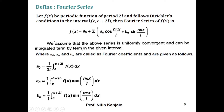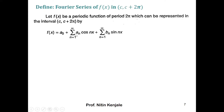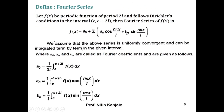Now let us find the Fourier series of f(x) in the interval c to c+2π, where the period of f(x) is 2π. All you have to do is simply replace every l in this definition by π. After substituting l = π, the π in the numerator and denominator will cancel, so the Fourier series becomes f(x) = a₀ + summation of aₙ cos(nx) + bₙ sin(nx).